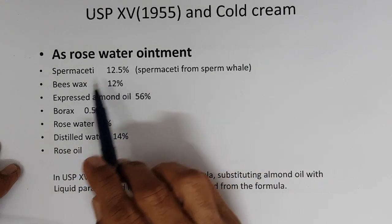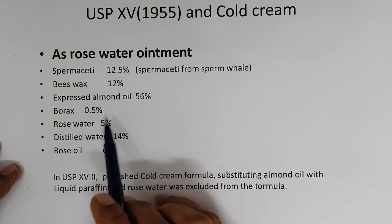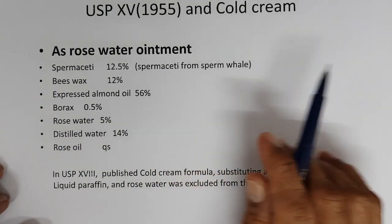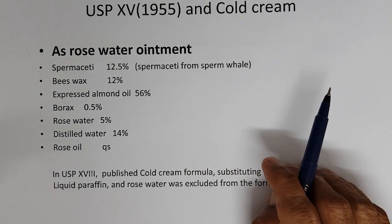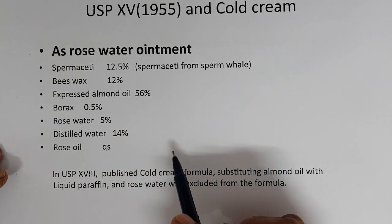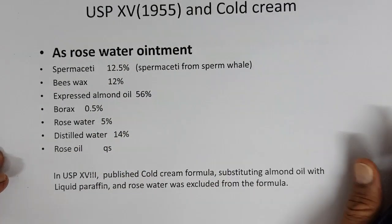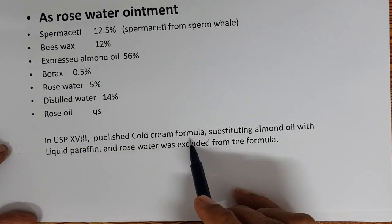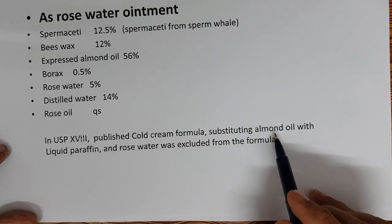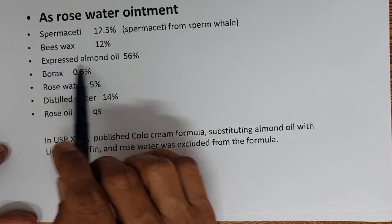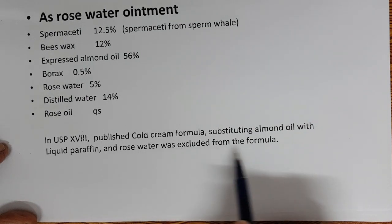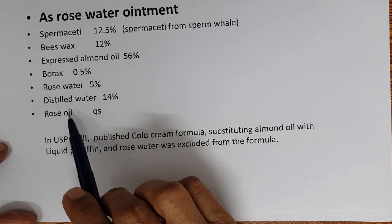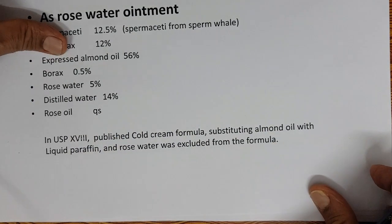In the monograph of USP 15, cold cream type of formulation was labelled as rose water ointment, which contained spermaceti 12.5%, beeswax 12%, expressed almond oil 56%, borax 0.5%, rose water, distilled water, and rose oil. Spermaceti is a waxy material from the sperm whale. This formula became official in the United States Pharmacopeia in 1955. Subsequently in USP 18, the cold cream formula was published substituting almond oil with liquid paraffin and excluding rose water.